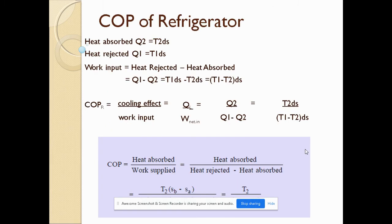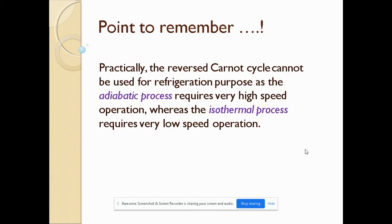Now, calculating the coefficient of performance of the refrigerator: heat absorbed is denoted as Q2 and heat rejected as Q1. The work input is equal to heat rejected minus heat absorbed. The coefficient of performance is heat absorbed divided by work supplied, where work supplied equals heat rejected minus heat absorbed.